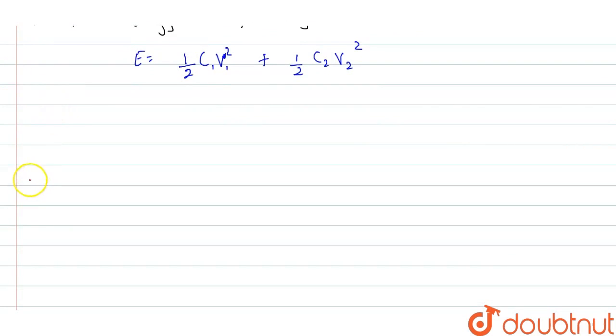The next part of our question asks us to find the total energy after they are connected. If we assume that V is the potential across the parallel combination, we can write C1 plus C2 times V will give us C1 V1 plus C2 times V2.